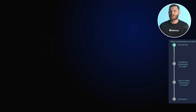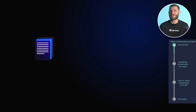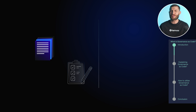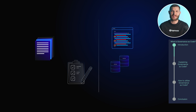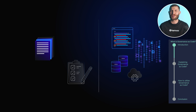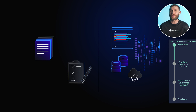Governance as code is a modern approach to managing policies and compliance through code. It's a shift from the traditional way of handling governance, which relied on manual processes and documentation. With governance as code, you automate governance tasks, ensuring that policies are consistently applied across your systems without the risk of human error.